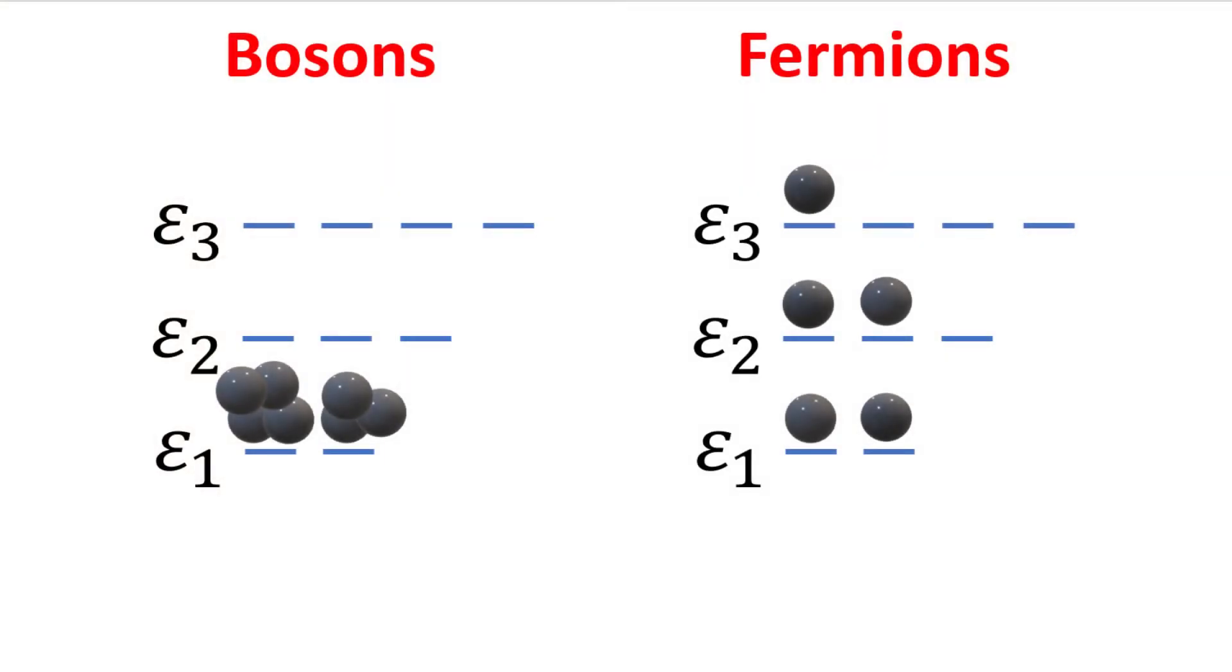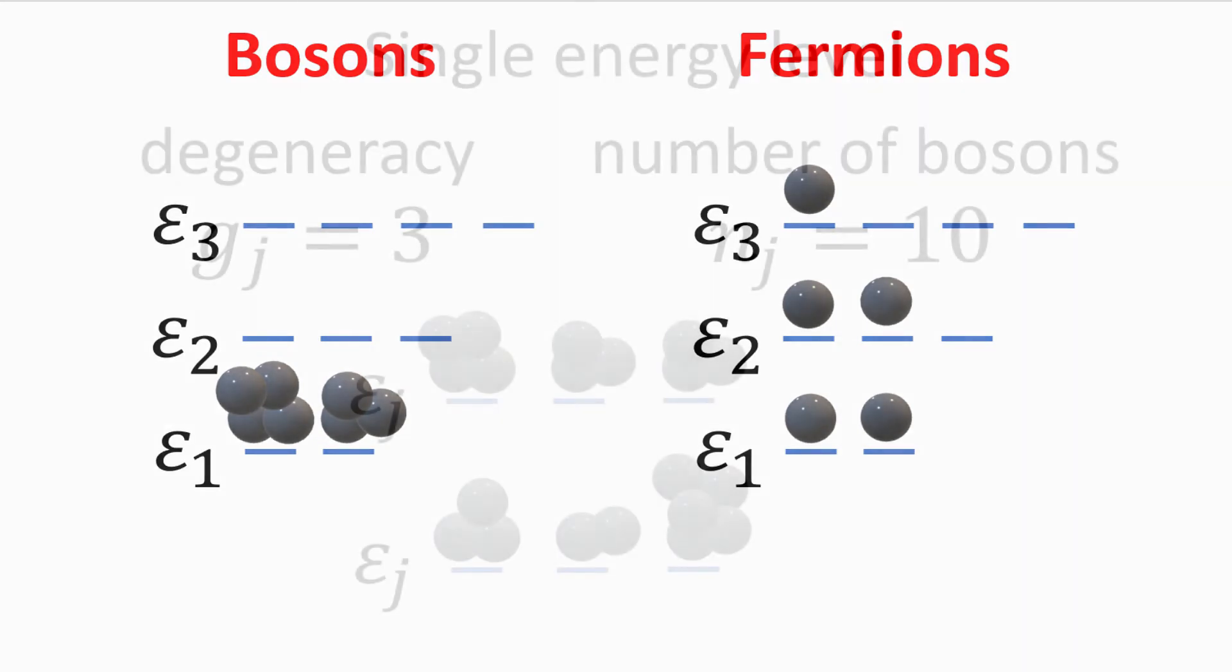Bosons are particles with integer spin. Due to the symmetric two-particle nature of its wavefunctions, bosons do not obey the Pauli exclusion principle like fermions whose two-particle wavefunctions are antisymmetric. In other words, a quantum state can accommodate more than one boson.